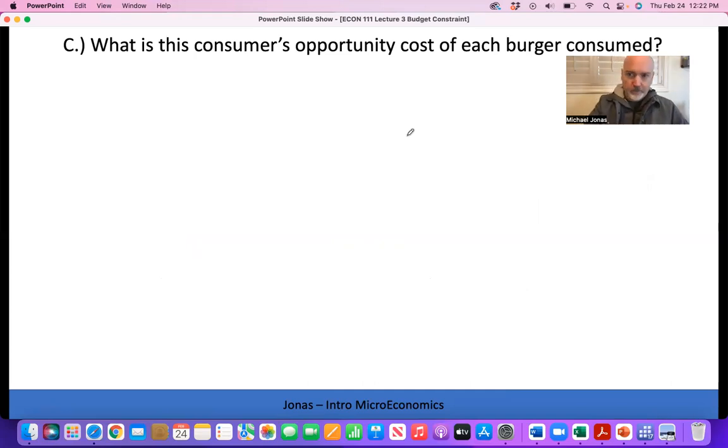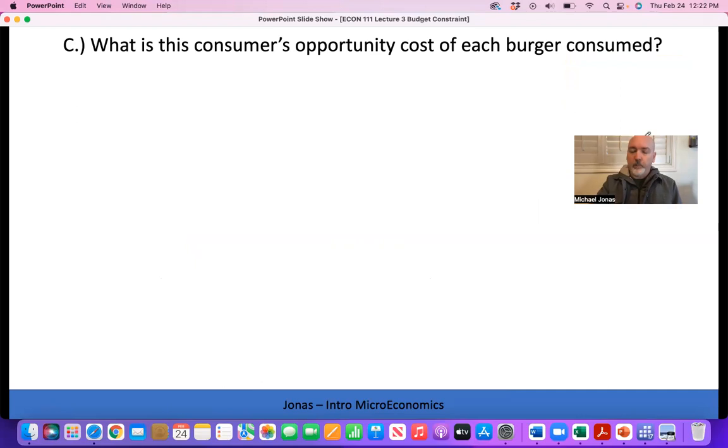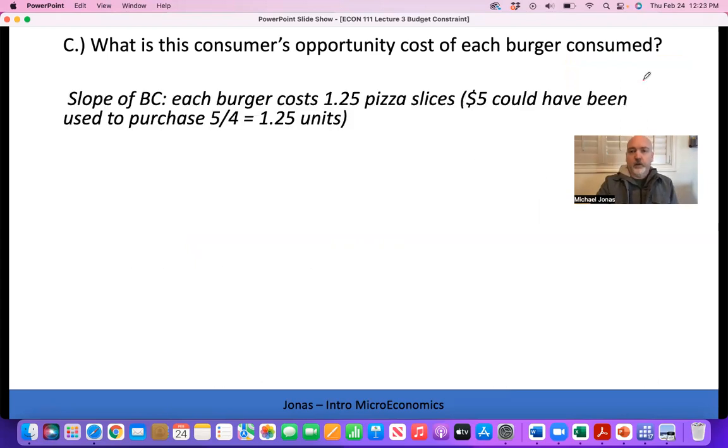Moving on. We've pretty much already answered this one - what is the consumer's opportunity cost of each burger consumed? The opportunity cost of the good on the X axis is the slope of the budget constraint line, so that's 1.25. Whenever you get confused, you can calculate it with the ratio of prices.